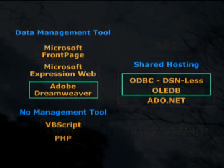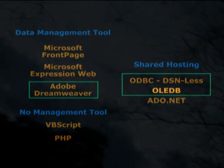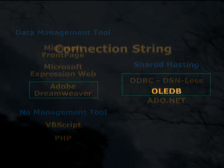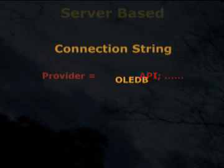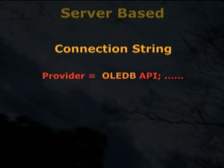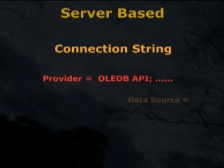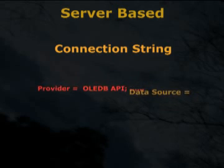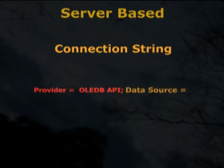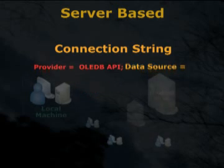So let's say I'm using Adobe Dreamweaver's data management tool with the ASP scripting language, and I want to connect to a Microsoft SQL Server database I created at my host, and I want to use the OLEDB provider to establish the connection. I'll need to look up the OLEDB API for SQL Server and get the path to the database — where that path must go after 'datasource equals.'